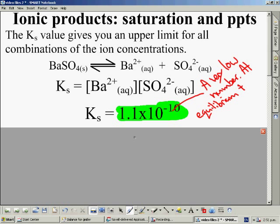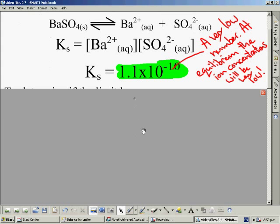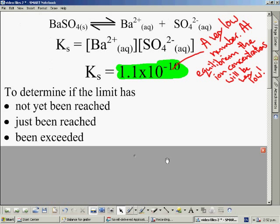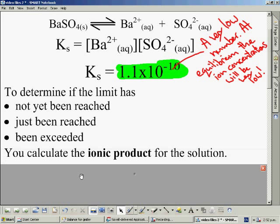Whenever the barium ion and the sulfate ion concentrations multiply to give you this number, then the solubility reaction is going to be at equilibrium. But in all situations we don't have quite low concentrations. When we use an ionic product, we use this to determine if the limit for these ions has either not been reached, has just been reached, or has been exceeded. Depending on which one of these we get, the solution is going to behave in a certain way.